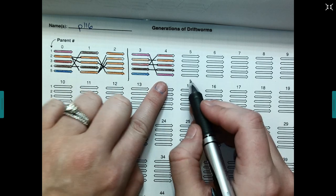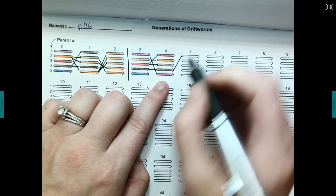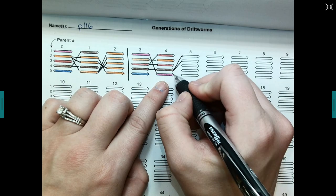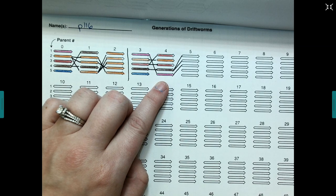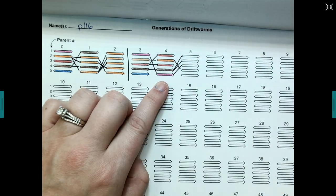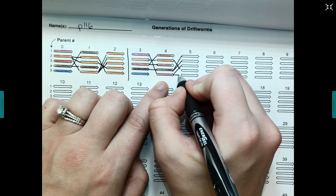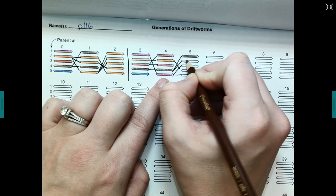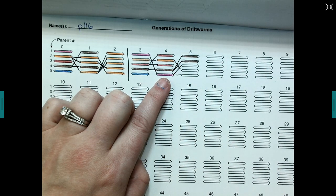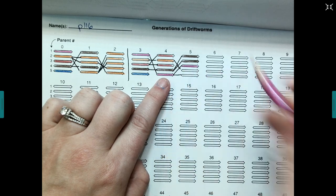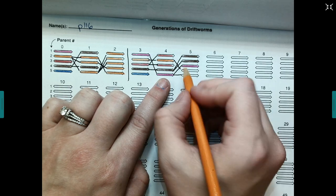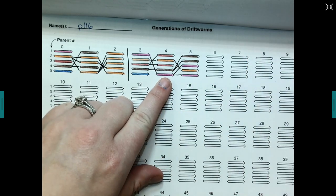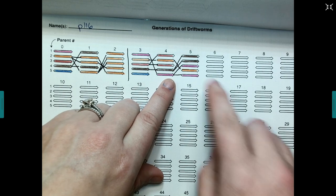So let's roll for our second generation. I rolled a four and then I rolled another four, a five, a two, and another five. So my first drift worm for here is going to be brown, second one is brown, third one is pink, fourth one is orange, and the last one's going to be pink. So I have lost the red allele. So I'm down to three colors in this generation of my drift worms.